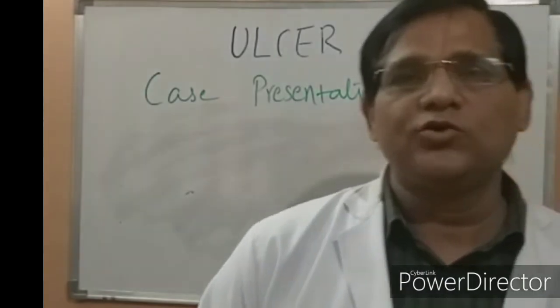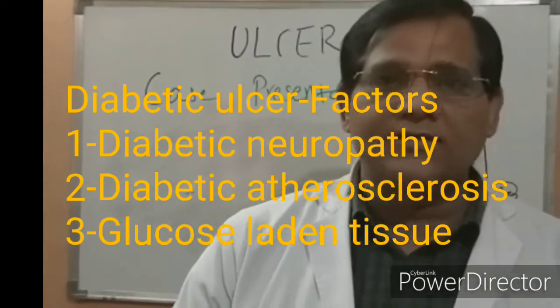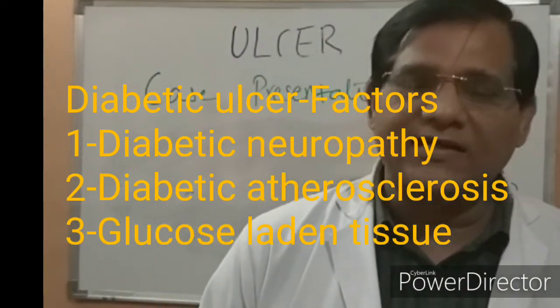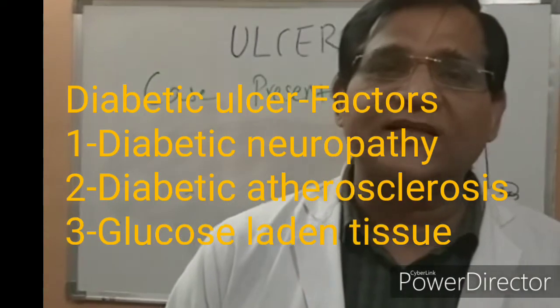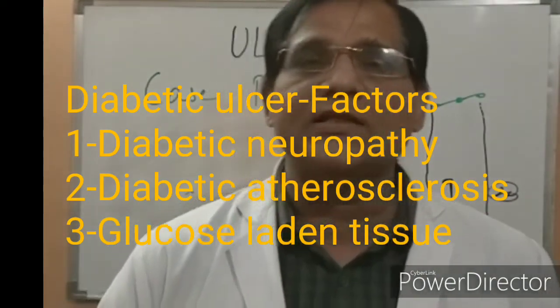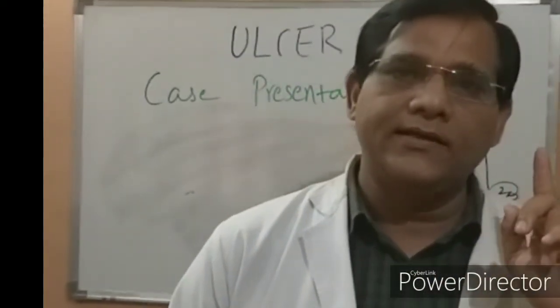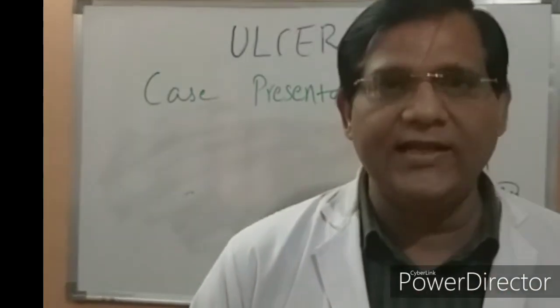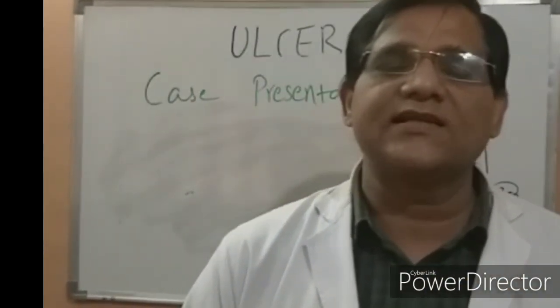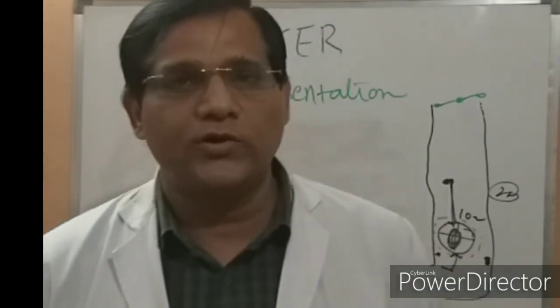A diabetic ulcer is caused by three things: first, decreased sensation — the area becomes insensitive, callus forms, leading to mal-perforans. Second, decreased arterial supply that resists healing. Third, glucose-laden tissue is itself a source of infection. These three causes together lead to the diabetic ulcer.